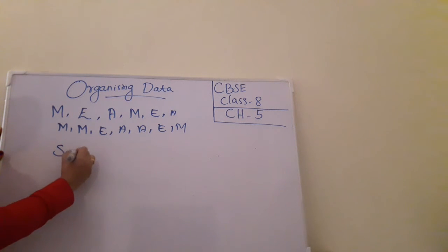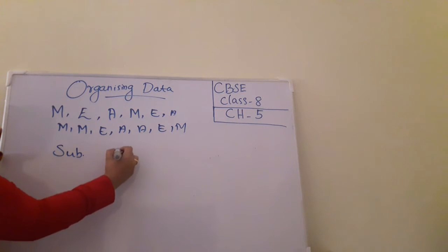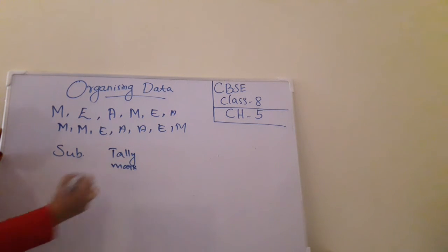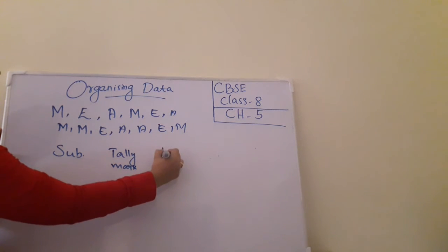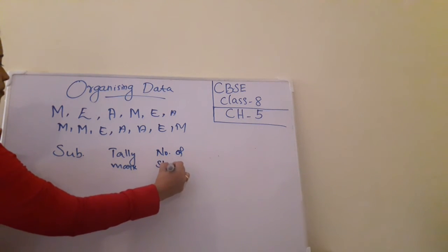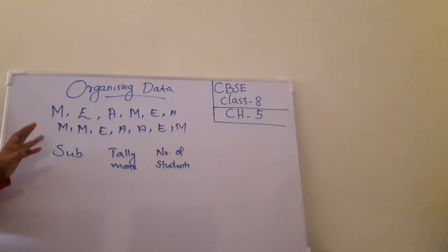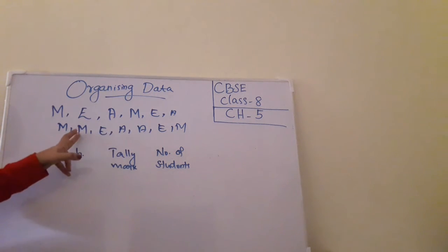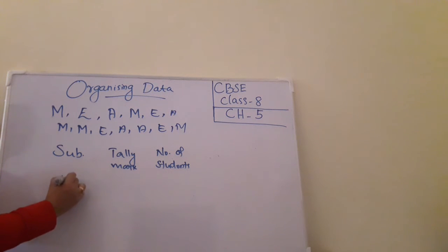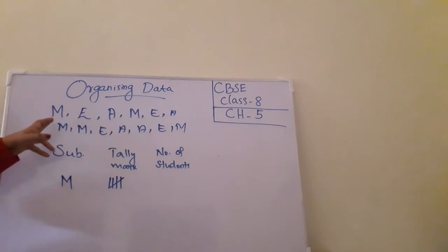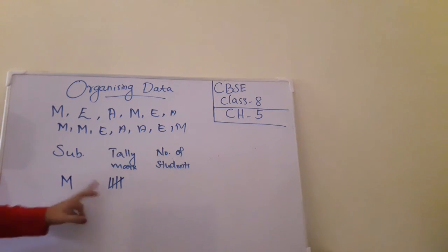We can make a table with the subject, a tally mark column, and the number of students. How many students like Math? 1, 2, 3, 4, and 5 — so 5 students like Math.